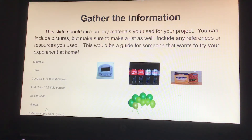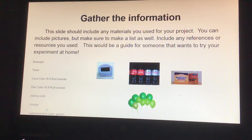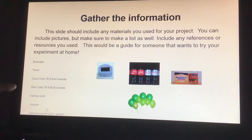On the third slide you're going to gather information. This slide should include any materials you used for your project. You can include pictures, but make sure to also make a list. Include any references or resources you used — this would be a guide for someone that wants to try your experiment at home. For example: a timer, Coca-Cola 16.9 fluid ounces, Diet Coke 16.9 fluid ounces, baking soda, vinegar, balloons, and pictures of them.